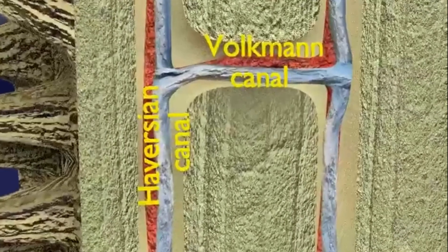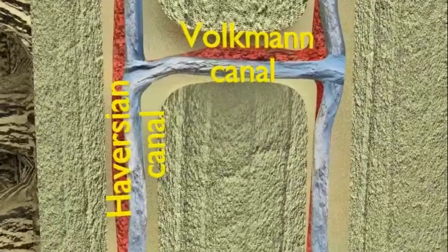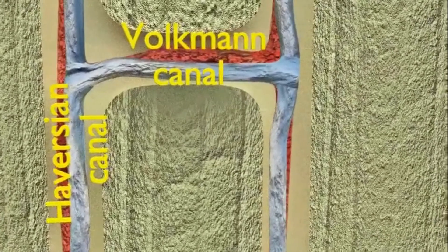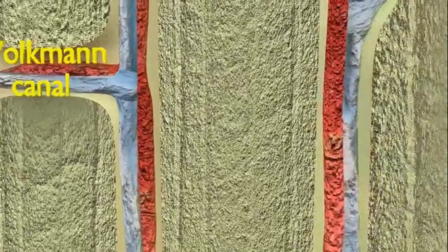The Volkman canals can be seen running perpendicular to the Haversian canals in the video and connect the osteones to one another. These also carry arterioles and venules.